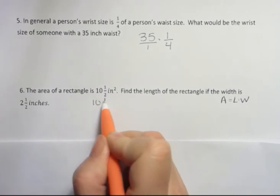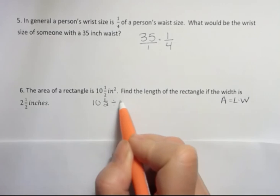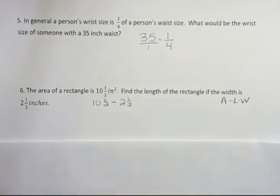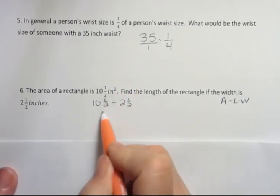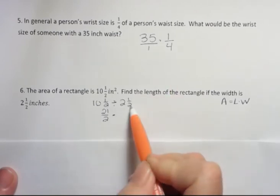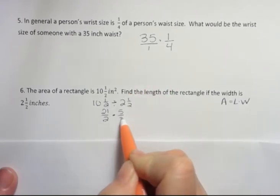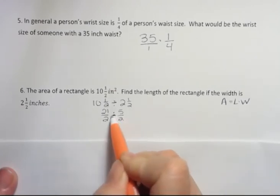We're going to take 10 and a half inches squared and divide by two and a half inches. And when we do that division, we're going to get the length. Okay. Let's just look at this one. Change it into an improper fraction. 10 times 2 is 20 plus 1 is 21. Change the division to multiplication. 2 times 2 is 4 plus 1 is 5 over 2. Whoops. We're still dividing here. I haven't flipped anything yet. That's just rewriting that as an improper.